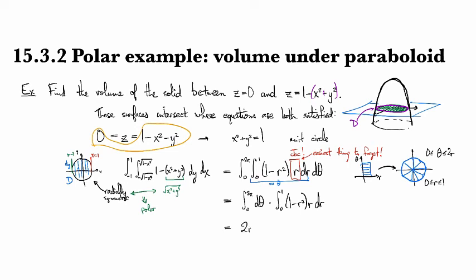So the first one just ends up being 2 theta, no sweat. For the second one, we have to integrate r minus r cubed. And that ends up, let's see, so this thing is r minus r cubed, and so when we integrate that, we get r squared over 2 minus r to the fourth over 4, and that's evaluated from 0 to 1.